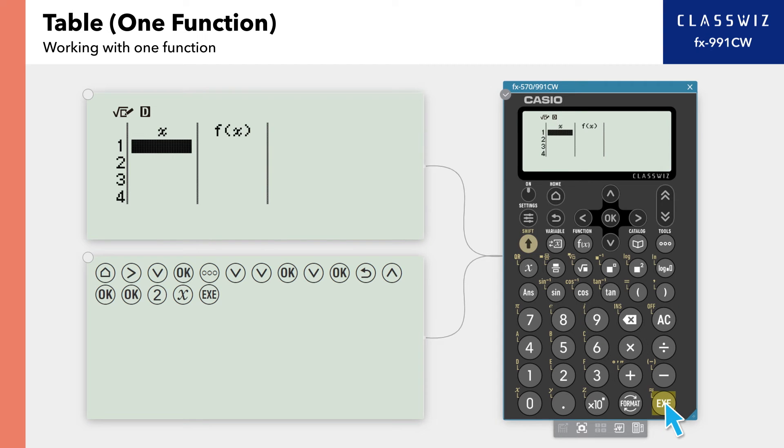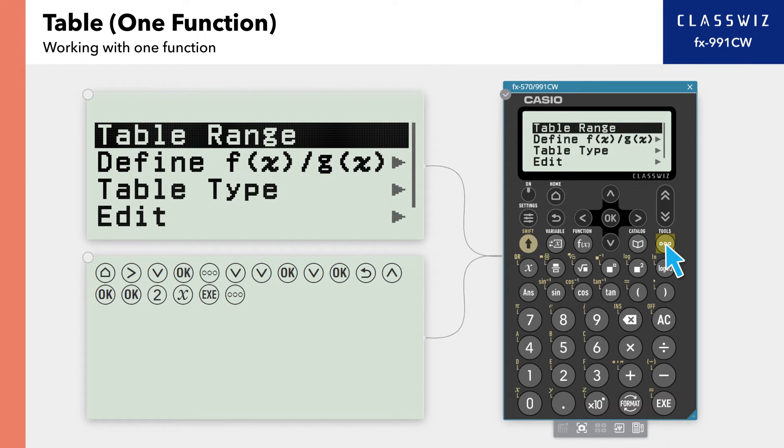Press Execute to return to the table screen. Finally, we need to enter the range of X in the function for values to appear in Table. Press Tools, then select Table Range.